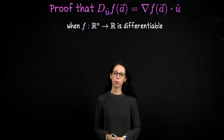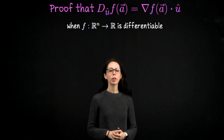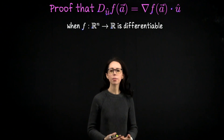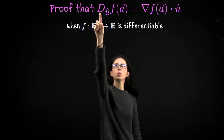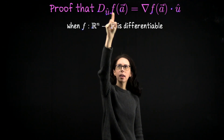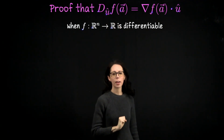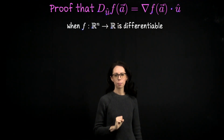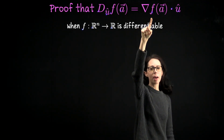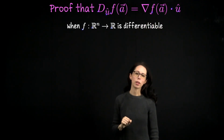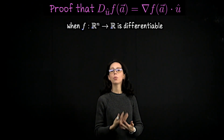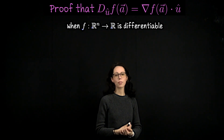In this video I'm going to prove that when you have a scalar-valued function of n variables which is differentiable, the directional derivative of f at a point a in the direction of a unit vector u can be computed as a dot product — it's the gradient of f at a dotted with the unit vector u. This is how we often compute directional derivatives to avoid having to use the limit definition.